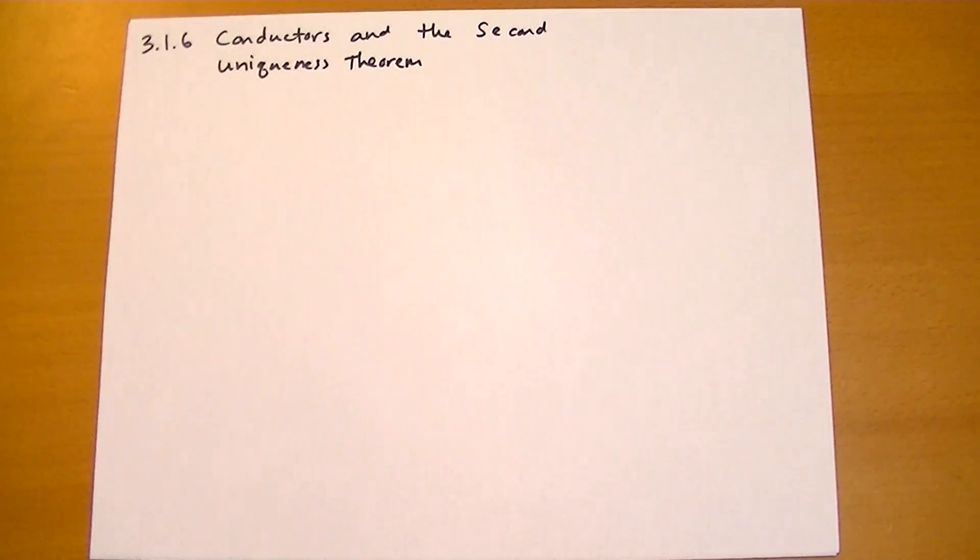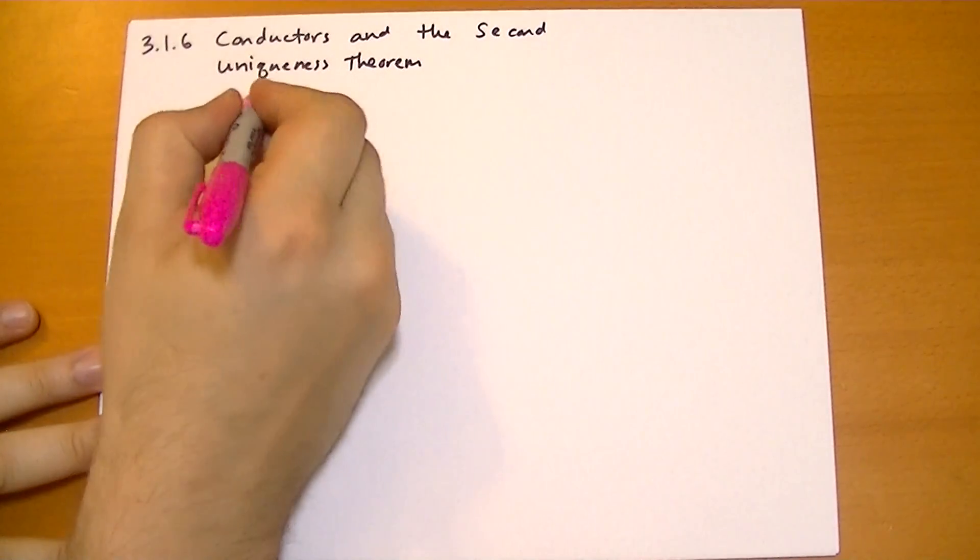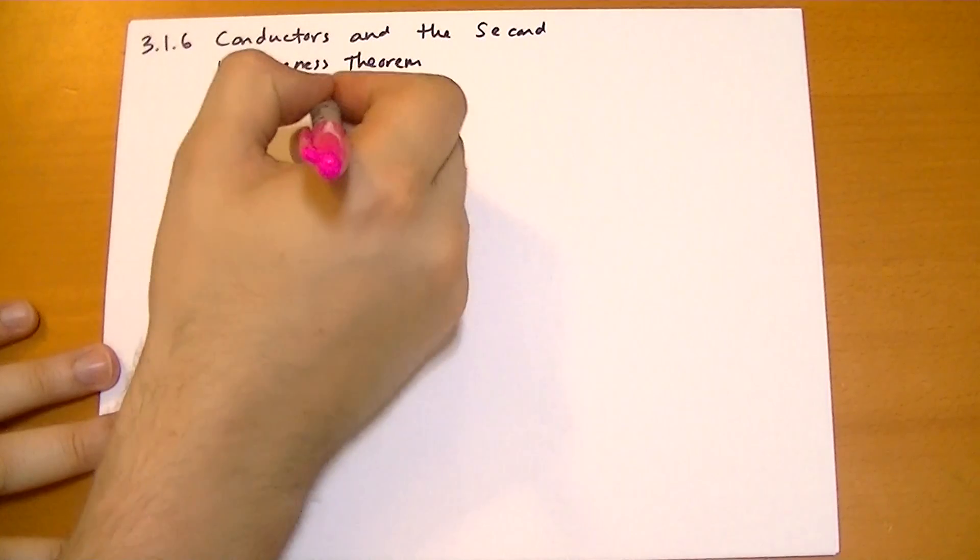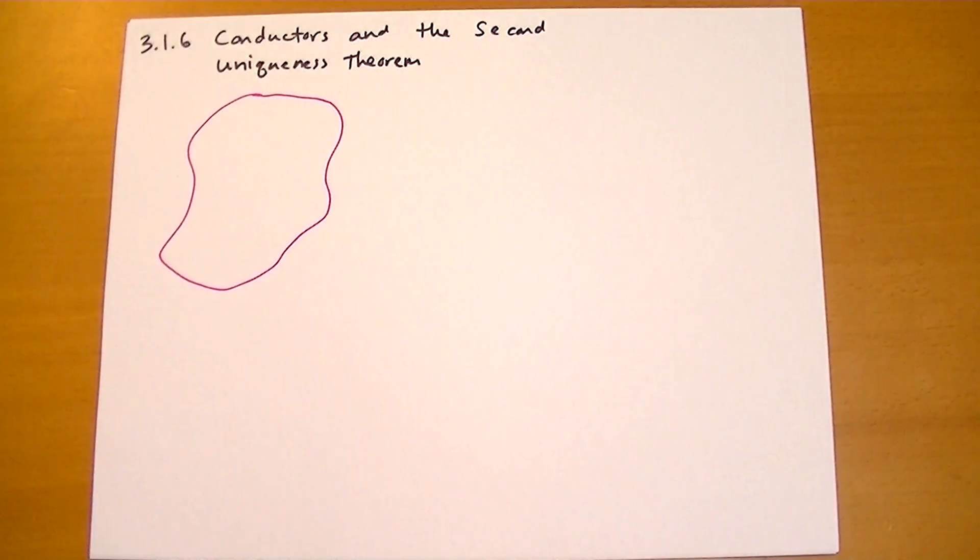This one's a little bit different. What if we don't know the potential at the boundary of a region? So let me draw that. I'll make it big this time. I always make small pictures. This time it'll be big. So we have some random region.